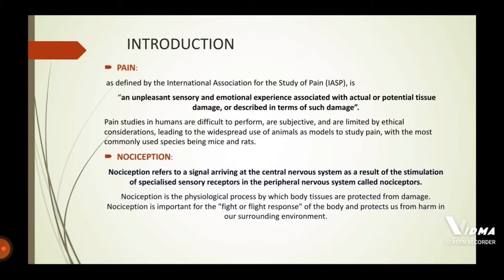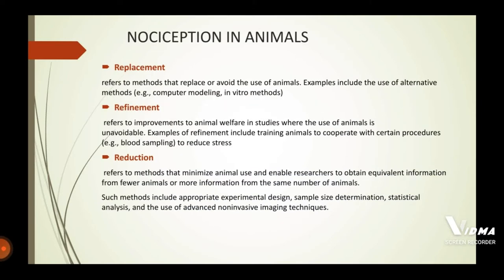In animal research, the three R's — Replacement, Refinement, and Reduction — are the guiding principles for more ethical use of animal testing. Replacement refers to methods that replace or avoid the use of animals entirely, for example using computer modeling or in vitro methods.